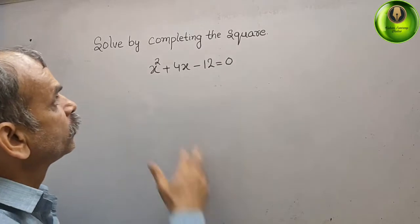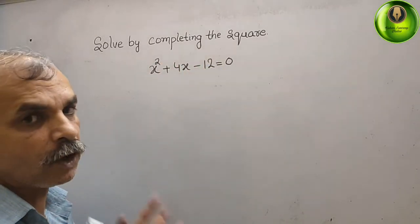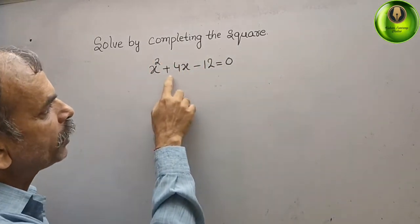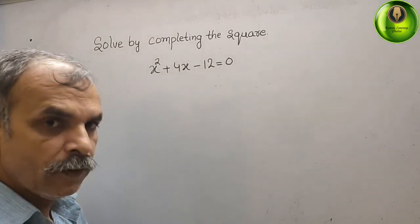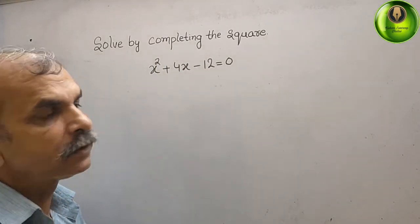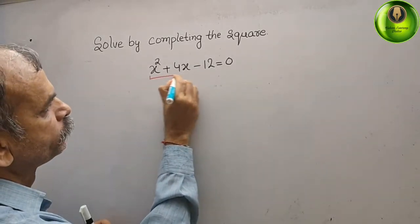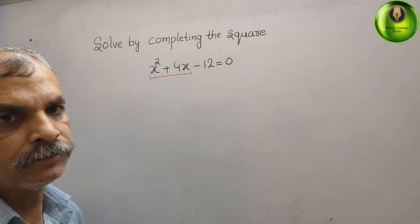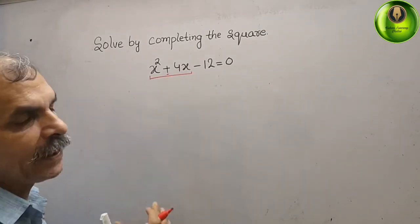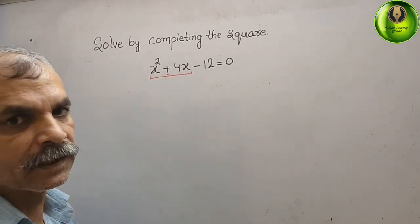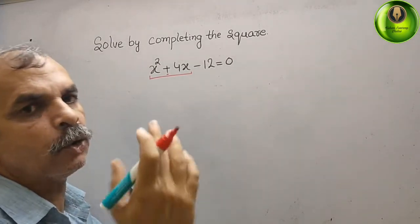The question is: solve by completing the square. What they have given is x squared plus 4x minus 12 equals 0. We have to look at the middle term — they have given a positive sign in between — and we will make it an (a plus b) whole square form.